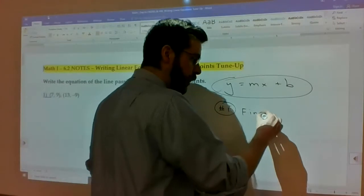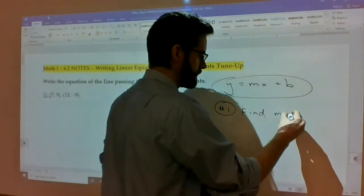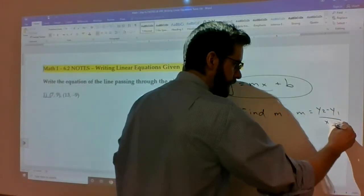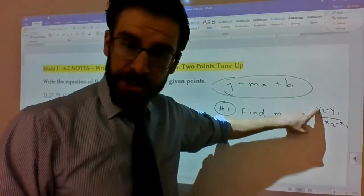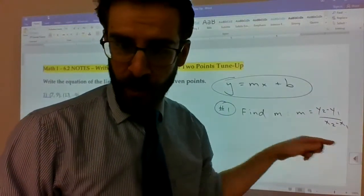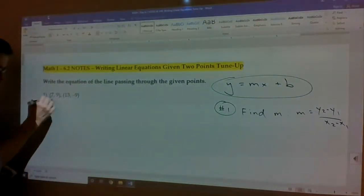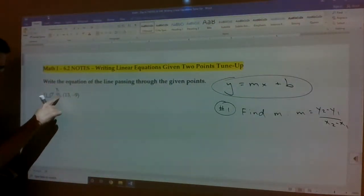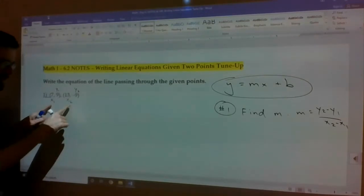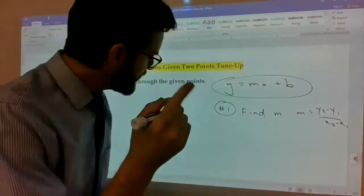For starters, we should keep in mind that y equals mx plus b is our formula. We ultimately want our linear equation to look like that unless it's some kind of weird special case. There's three steps to this process. The first one is to find the slope, which is designated by the number multiplied by x, or m. There's a formula for that.